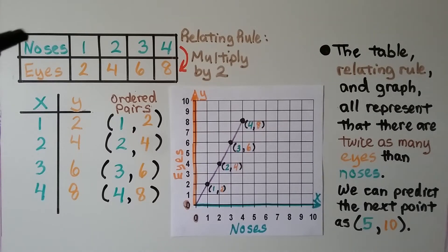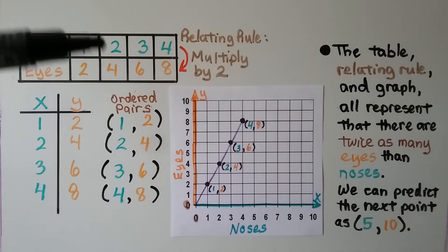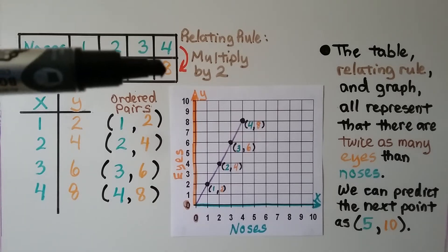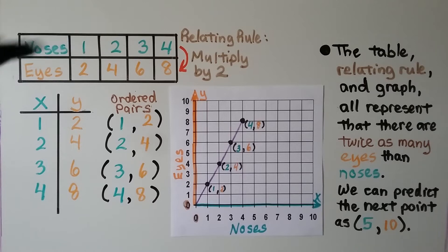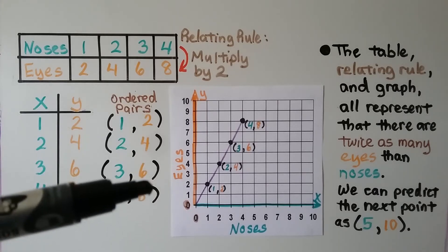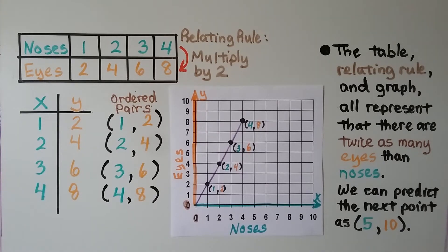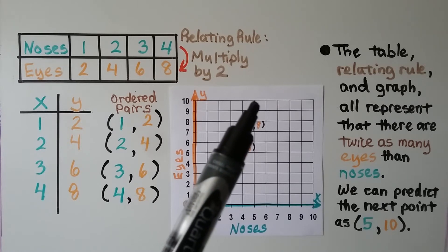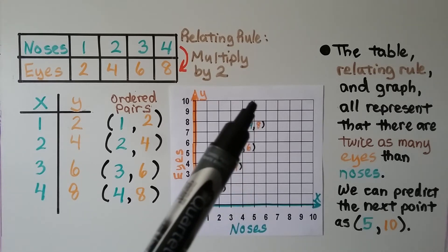For our table of noses and eyes, the relating rule was multiplied by 2. 1 times 2 is 2. 2 times 2 is 4. 3 times 2 is 6. 4 times 2 is 8. And the number of noses and the number of eyes, these were our x and y values that we can write ordered pairs, our number pairs. In the table, the relating rule and graph all represent that there are twice as many eyes than noses. And we can predict the next point as a 5 and a 10. A 5 for x and a 10 for y. That would be, with the line going straight, the next intersection of the x and y values.